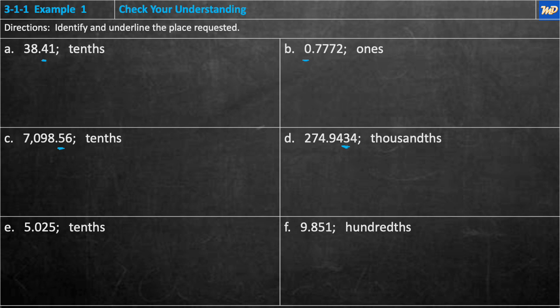E: 5.025 — underline the tenths place. The tenths is the first place to the right of the decimal point, so it's the 0. F: 9.851 — underline the hundredths place. The hundredths place is the second place from the decimal point; going ones, tenths, hundredths — the hundredths is the 5.